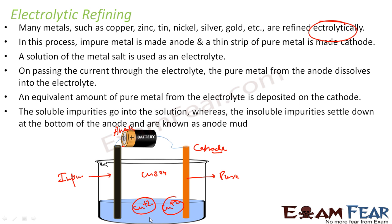Now, the flow of electrons is in this direction — electrons flow from the anode. Copper from the copper sulphate ions will join the cathode: copper plus an electron becomes copper, and it adds to the cathode. At the anode, copper wants to lose an electron. The flow of electrons is in this direction, so copper loses an electron, becomes copper plus, and goes into the solution. The mud and impurities fall down because they do not become copper plus ions.